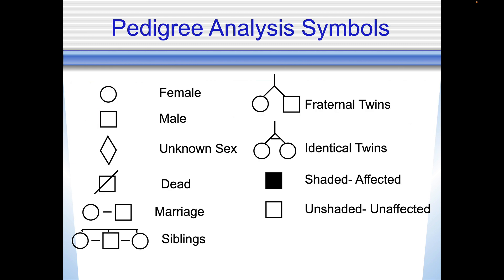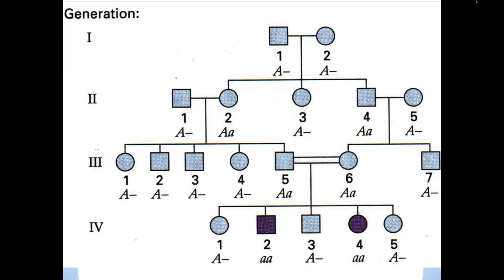Pedigree analysis — symbols: circles are females, squares are males, a diamond is unknown, a line through a symbol means deceased, a line connecting symbols indicates marriage, and offspring shown underneath are siblings. Fraternal twins are shown with a splitting line, or identical twins otherwise. Shaded means affected, unshaded means unaffected by the condition. Generations run from top to bottom — the first generation is at the top, with second, third, and fourth going down.